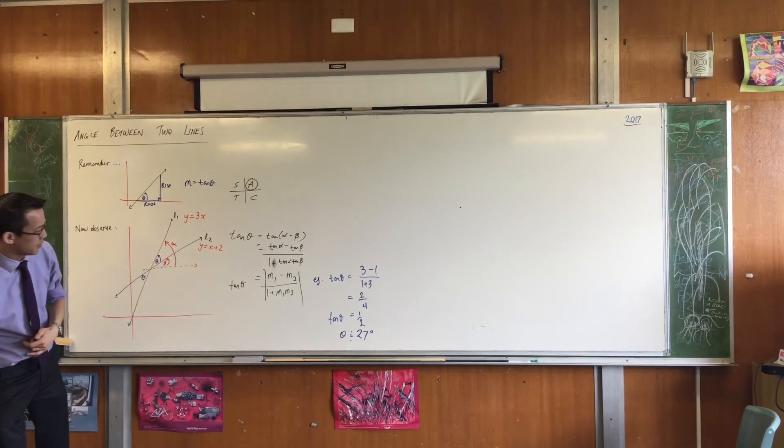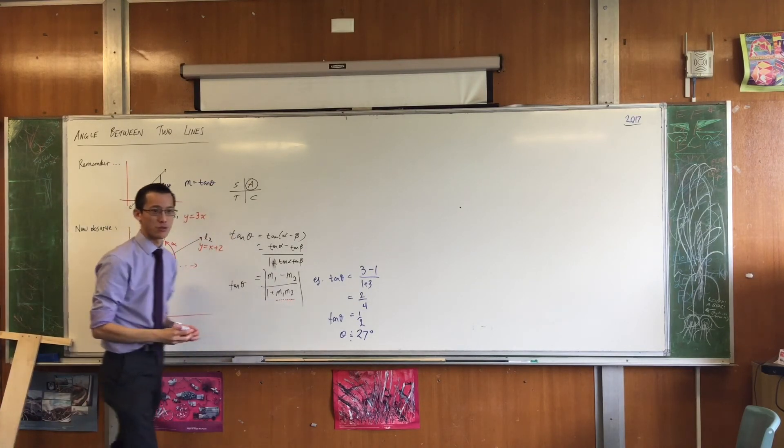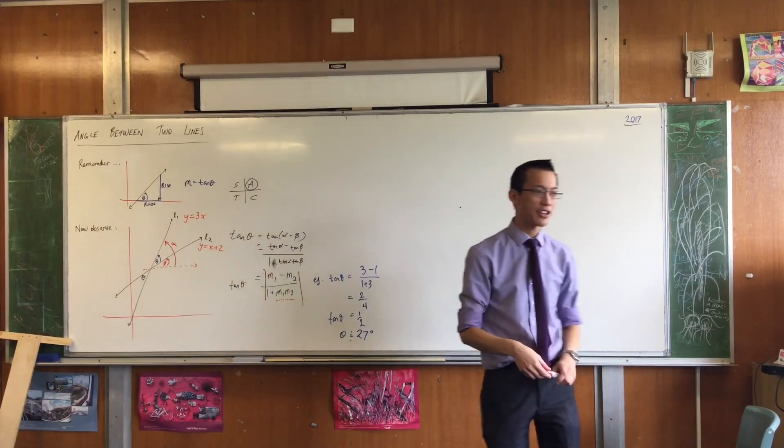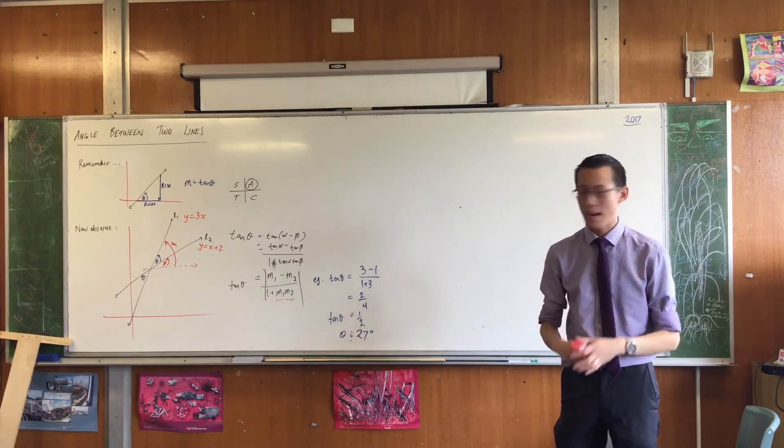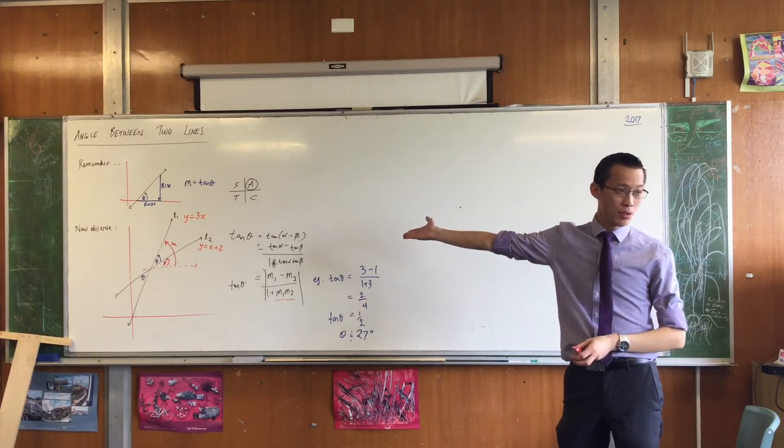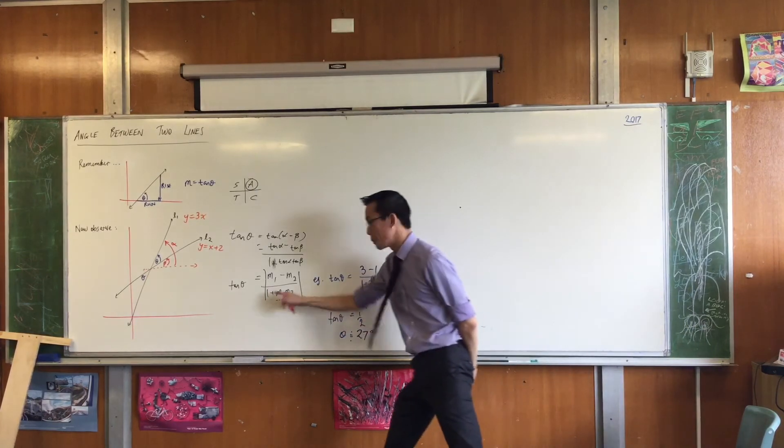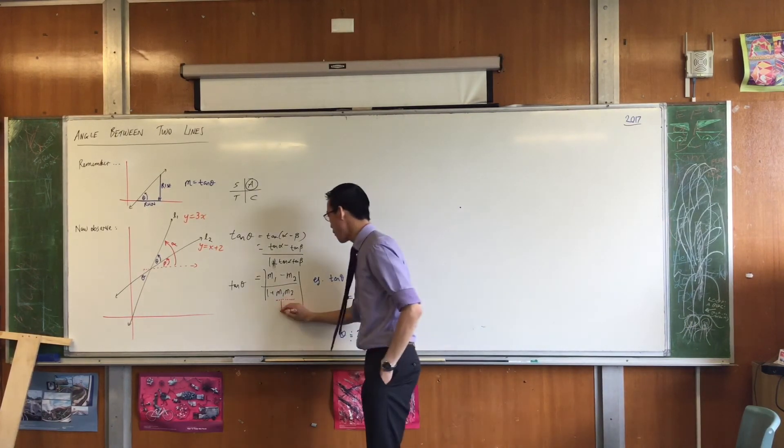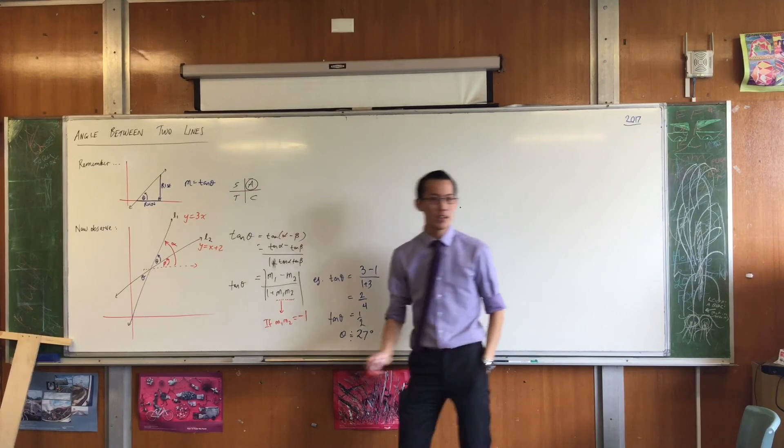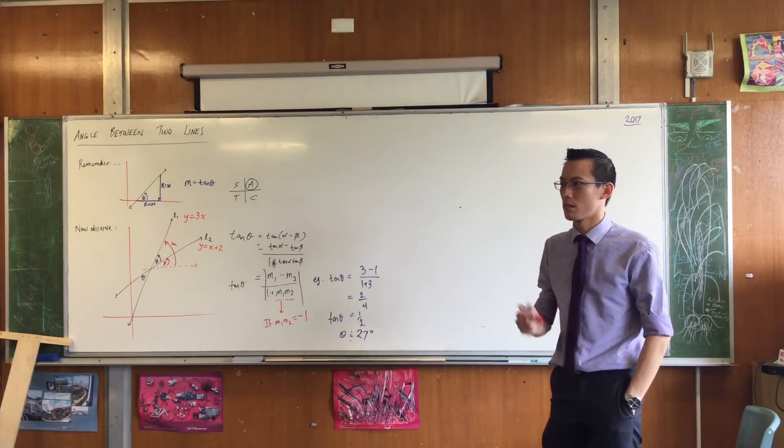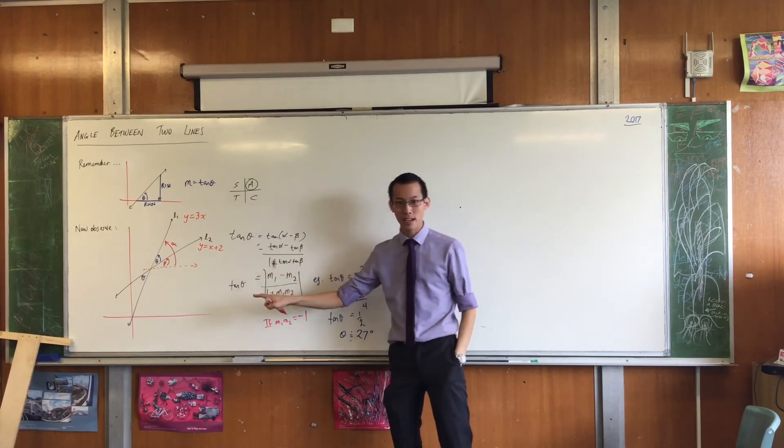Now, before we leave this, and I'll get you to write this down, there's one little trick you have to watch out for. See this guy here? M1, M2. You get into a little bit of trouble with fractions whenever your fractions have a denominator of zero. That makes things blow up, right? What value of M1, M2 would make the denominator zero? This is 1 plus M1 M2. So if M1 M2 equals what? Minus 1. Negative 1, you're in trouble. Now, here's my question. Why? Why is it that this causes trouble for this? Can anyone see it? It's a perpendicular line.